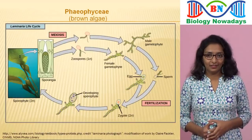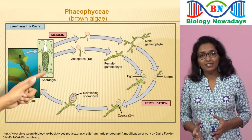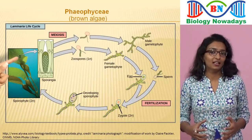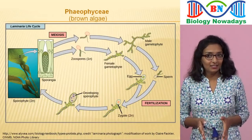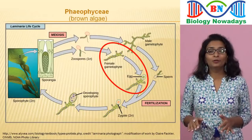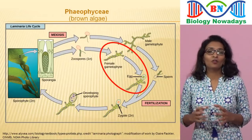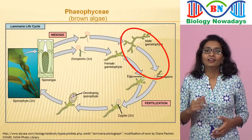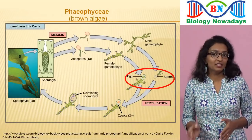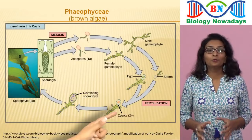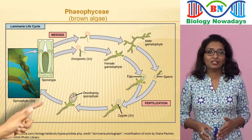Let's see the life cycle of Laminaria. Zoospores are produced in structures called sporangia, which are seen on the blade or leaf-like structure of the alga. The haploid zoospores germinate into individual algae. This thallus is called a female gametophyte if it produces a female gamete or egg, and a male gametophyte if it produces a male gamete or sperm. This is an oogamous type of reproduction — the sperm nucleus fuses with the egg and forms a zygote. The zygote develops into a young alga called the sporophyte, because when it matures it will produce spores.